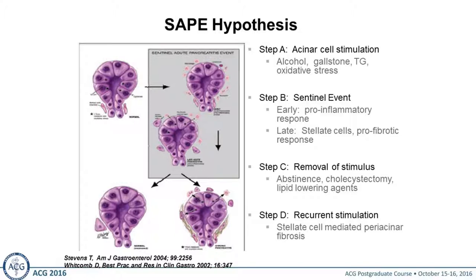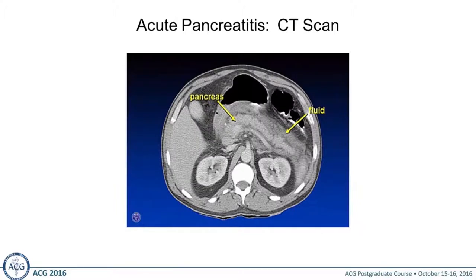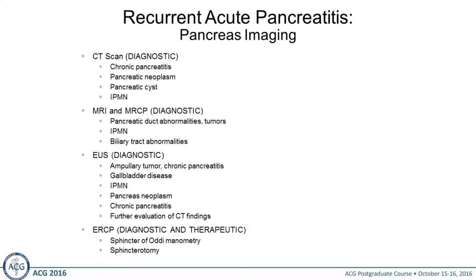If you can remove the stimulus, your pancreas has the opportunity to go back to normal. If you continue to have insults on the pancreas, stellate cells lead to fibrosis and you end up with chronic pancreatitis. If you have recurrent acute pancreatitis, the incidence of chronic pancreatitis can be as high as 25% to 30%. This is a CT scan of a person with interstitial pancreatitis — the pancreas is well perfused with no darkened areas to suggest necrosis.